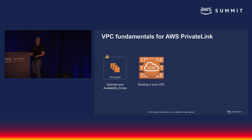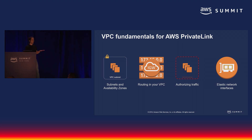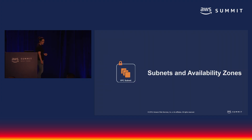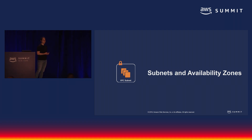Subnets are, as the name suggests, subnetworks of your VPC. They're how you use your VPC to deploy high availability applications. They're relevant for PrivateLink because when you are creating a PrivateLink endpoint service — when you're sharing a service using PrivateLink — you want that service and that endpoint to be available in multiple availability zones for redundancy or potentially lower latency. AWS has a global infrastructure with 18 AWS regions. When you create a VPC, you're selecting a region, and your VPC crosses an entire region.